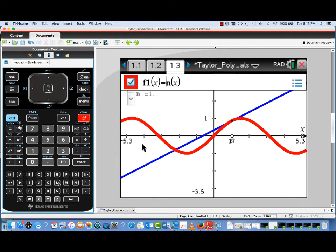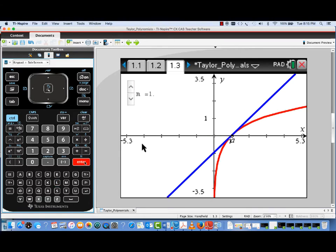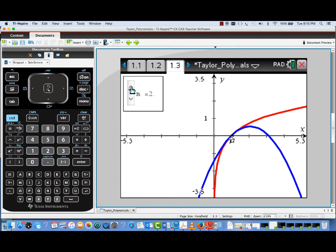So I'm making that edit to F1 of X equal natural log of X. We'll hit enter, and this will update our graph. Now the red graph is that of ln of X, and we have a tangent line approximation at X equal one.